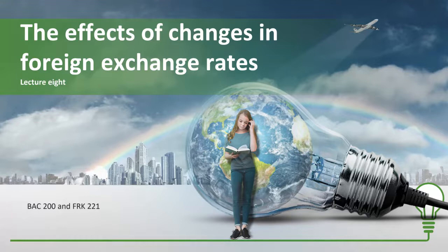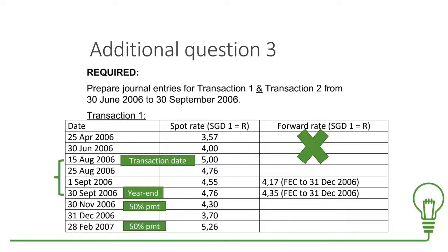Let's start with Transaction 1. In Transaction 1 there is no FEC — the FEC only comes into Transaction 2. With Transaction 1, remember, we're dealing with a debtor. The transaction date for Transaction 1 is 15th of August 2006. What's going to happen on this date is we're going to record a sale — credit revenue or sales because it increases, and debit the debtor because the debtor is increasing.